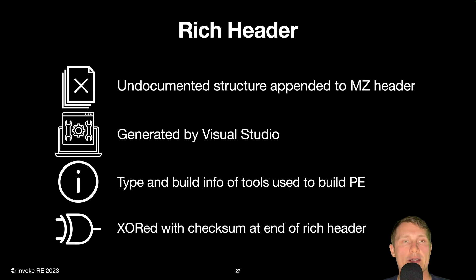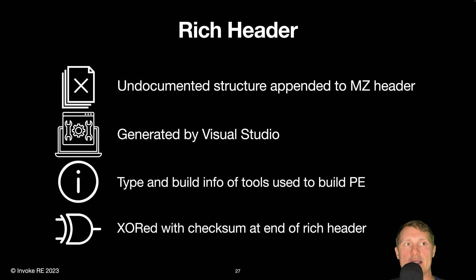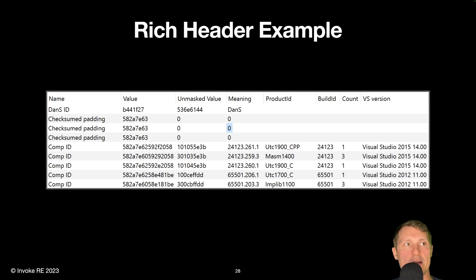The last thing we wanted to cover is the rich header, which is an undocumented structure that is appended to the MZ header. This header is not embedded within all portable executables, as it is generated by Visual Studio and is therefore only embedded when built with the Visual Studio build tools. The rich header contains entries for tools used to build the PE, including the type of tool, its version, and build number. Each rich header entry is XOR encrypted with a checksum at the end of the header. Here's an example of a decoded rich header in PE Bear, which decrypts the entries with the embedded checksum and maps those values to product IDs, build IDs, the count of how many times each tool was used, and the Visual Studio version.